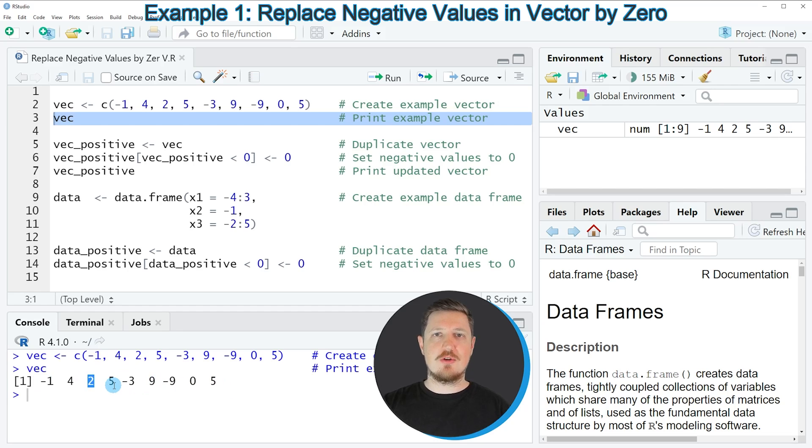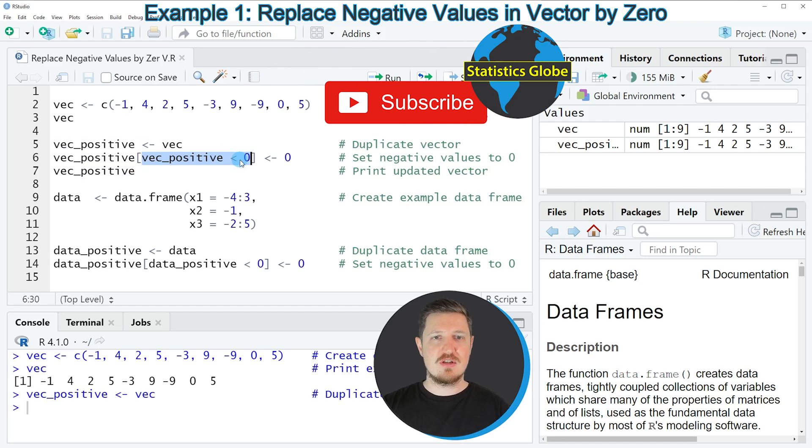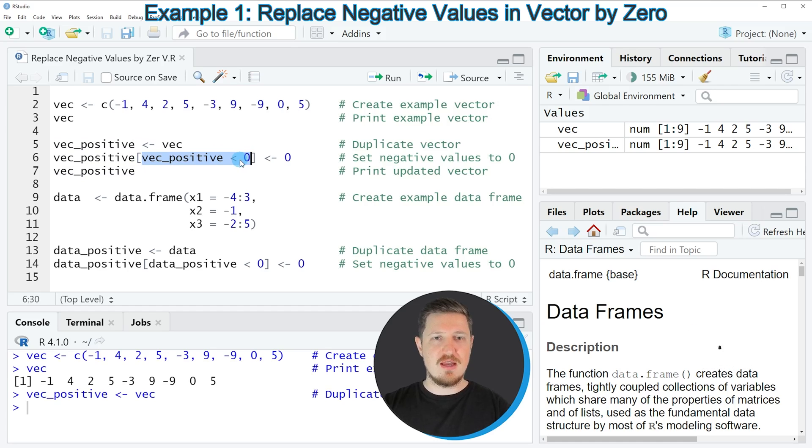Let's assume that we want to replace all of the negative values by the value zero. Then we can apply the code that you can see in lines 5 to 6. In line 5 of the code I'm first duplicating our vector because I want to keep an original version of the input vector. After running this line of code a new vector object is appearing at the top right, which is called VEC positive. Then in line 6 of the code I'm using a logical condition which tells R to remove all values that are smaller than zero and to replace these values by the value zero.